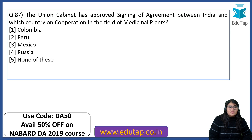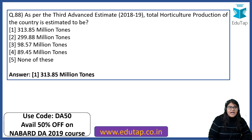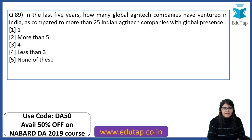The Union Cabinet has approved signing of agreement between India and which country on cooperation in the field of medicinal plants? As per the third advanced estimates, total horticulture production of the country is estimated at 313.85 million tons. In the last five years, more than 5 global agritech companies have ventured into India as compared to more than 25 Indian agritech companies with global presence.